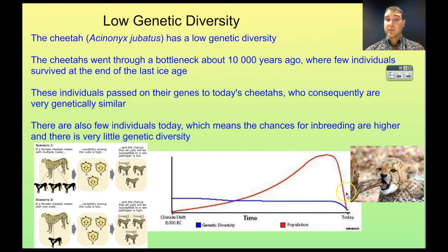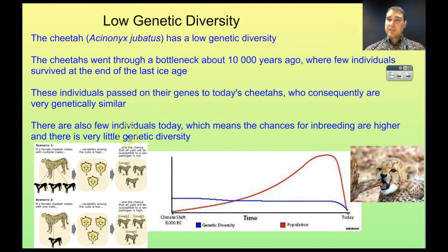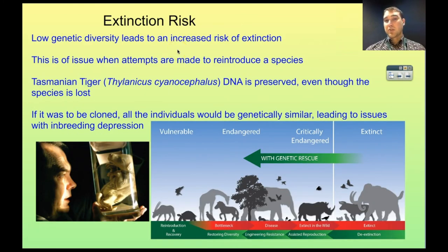An example of a species with low genetic diversity is the cheetah. Cheetahs are very highly related — you can take a skin graft from one cheetah and apply it to another and it will survive quite well. There is less than 1% genetic diversity between two individual cheetahs, which is very low compared to humans. The bottleneck they went through was about 10,000 years ago at the end of the last ice age, when very few individuals survived. Today, few remaining individuals due to human activities means higher chances of inbreeding, very little genetic diversity, and the probability that they won't survive long in a changing environment. Part of preservation efforts involves finding distantly related cheetahs to breed with each other to increase genetic diversity. Low genetic diversity and a limited gene pool leads to an increased risk of extinction.